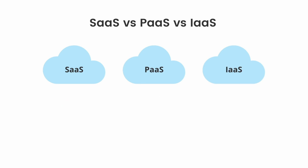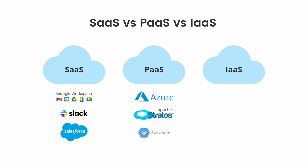Some common examples of the three: Google Workspace, Slack, and Salesforce are examples of Software as a Service. Microsoft Azure, Apache Stratos, and Google App Engine are examples of Platform as a Service. Amazon Web Services, DigitalOcean, and Rackspace are examples of Infrastructure as a Service.